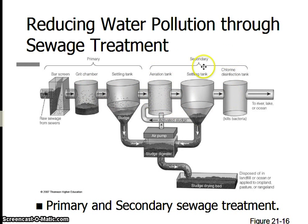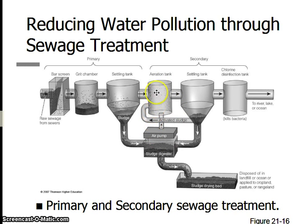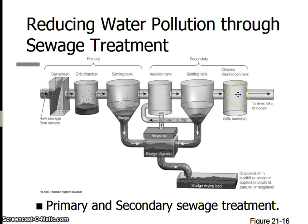Next come the biological processes. This is where we take advantage of the bacteria that's already in the water, and we feed it lots and lots of bubbles of oxygen. The bacteria already has all this extra food — we want it to have extra oxygen so that when it does its cellular respiration, it works quickly to get rid of that extra food. Then we allow the extra sludge to settle out.